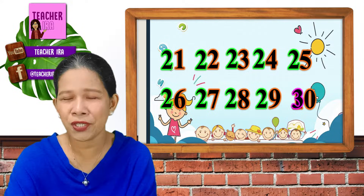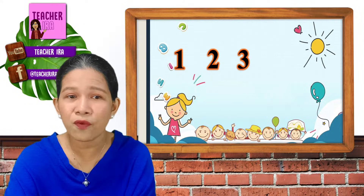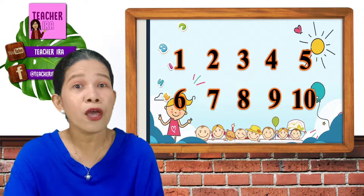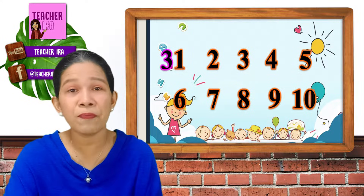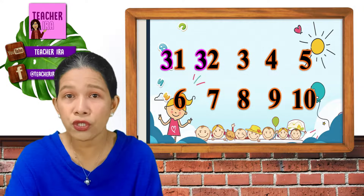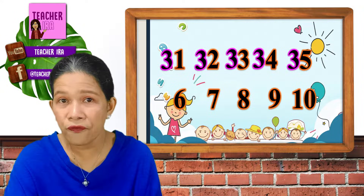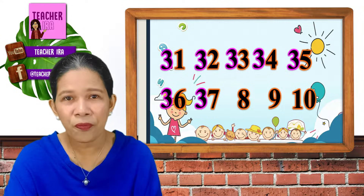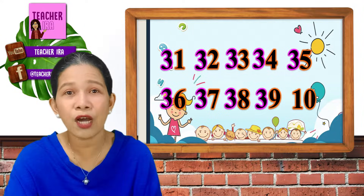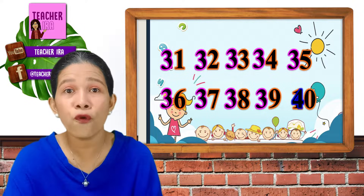And it's now 30. How do you say it? Yes, it's 30. Now, I will write numbers 1 to 10 again: 1, 2, 3, 4, 5, 6, 7, 8, 9, 10. And now we will add 3 in front. It becomes 31, 32, 33, 34, 35, 36, 37, 38, 39. And now we will have 4, and it becomes 40.